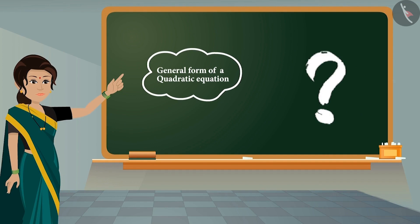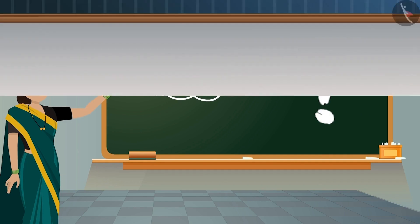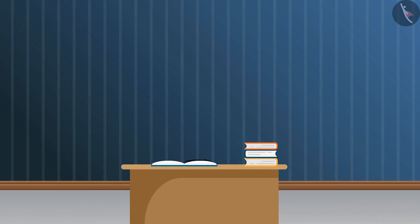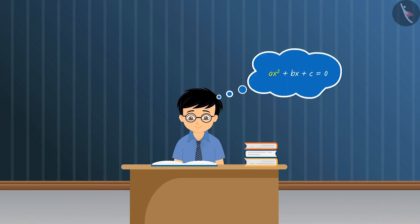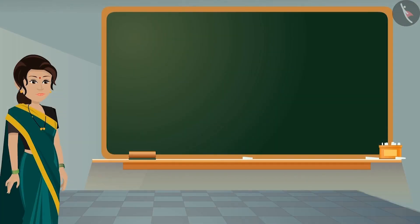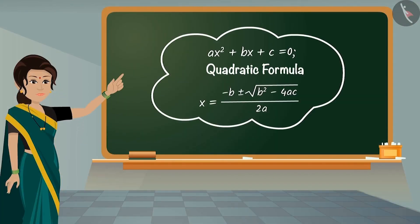Can you say what will be the general form of a quadratic equation? Ax squared plus bx plus c equal to zero is the general form of a quadratic equation. We saw in our previous video that roots of a quadratic equation can be obtained with the help of the quadratic formula.